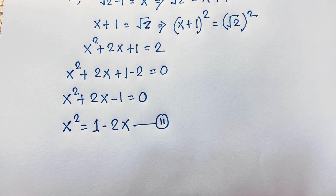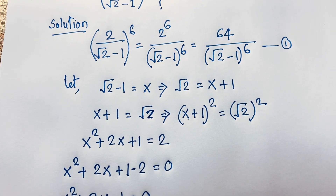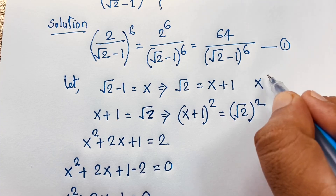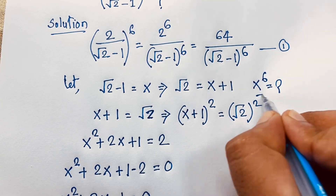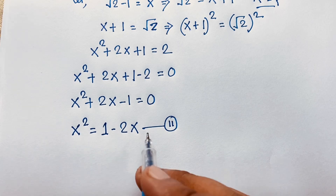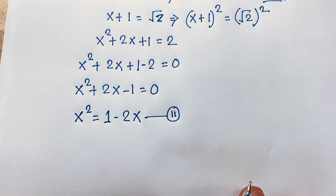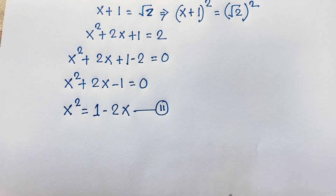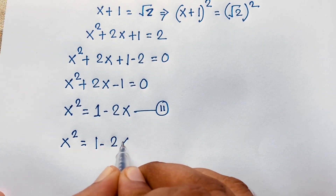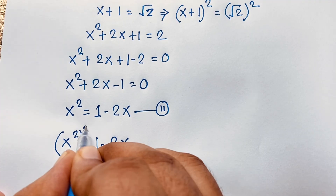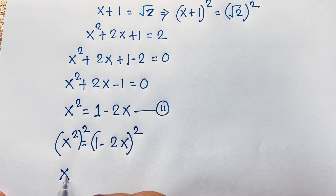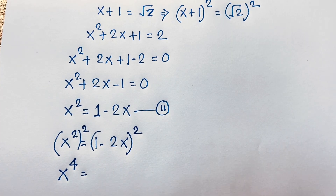Our target is x^6. Now starting from x² equals 1 minus 2x, if I square both sides again we get x^4. So x² squared gives x^4.